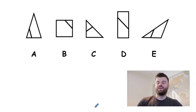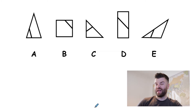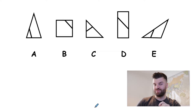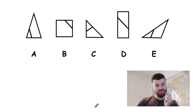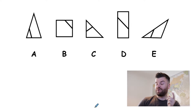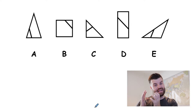Hey everyone, another video today. We're going to take a look at a certain type of non-verbal reasoning question called 'odd one out.' With these types of questions you are given five shapes, A to E, just like normal, and it's your job to identify which shape is the odd one out. There is a technique to this — it's important that your shape is the odd one out, but it's also important to remember that the other four shapes have to have something in common.